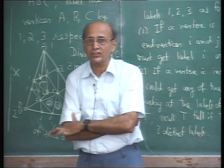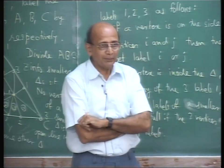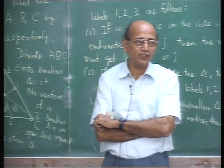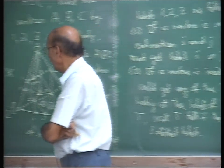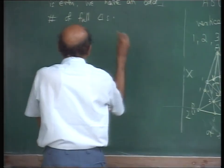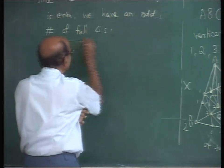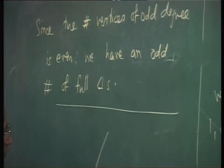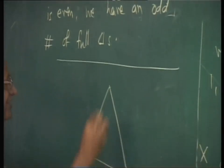Whereas the theorem we stated just said that you have at least one, what we actually ended up proving is you have an odd number of full triangles. So we proved something clearly stronger.